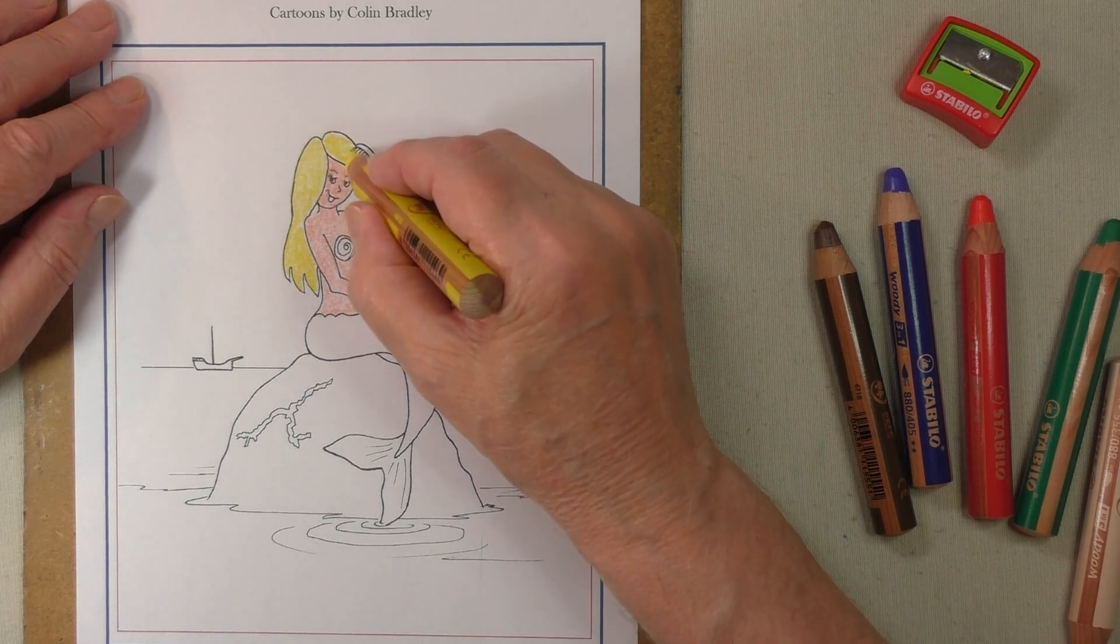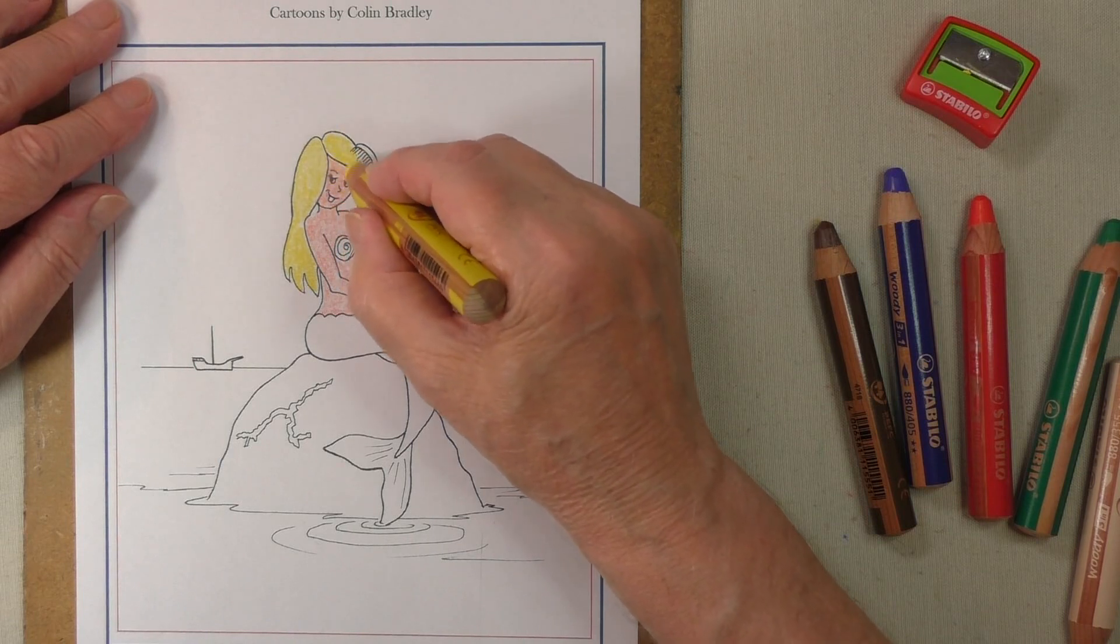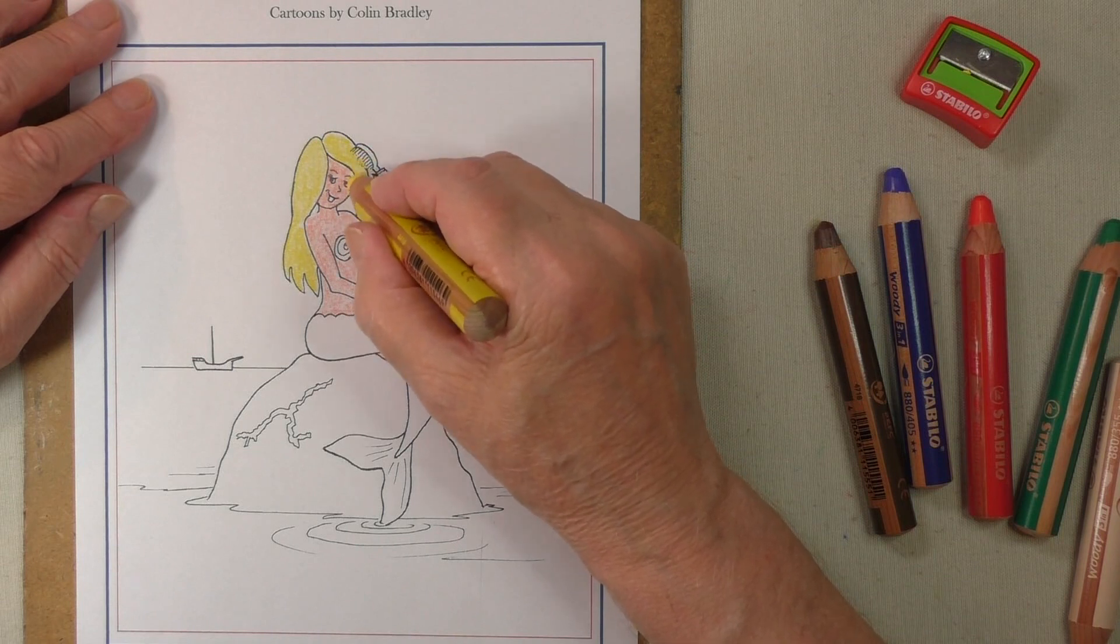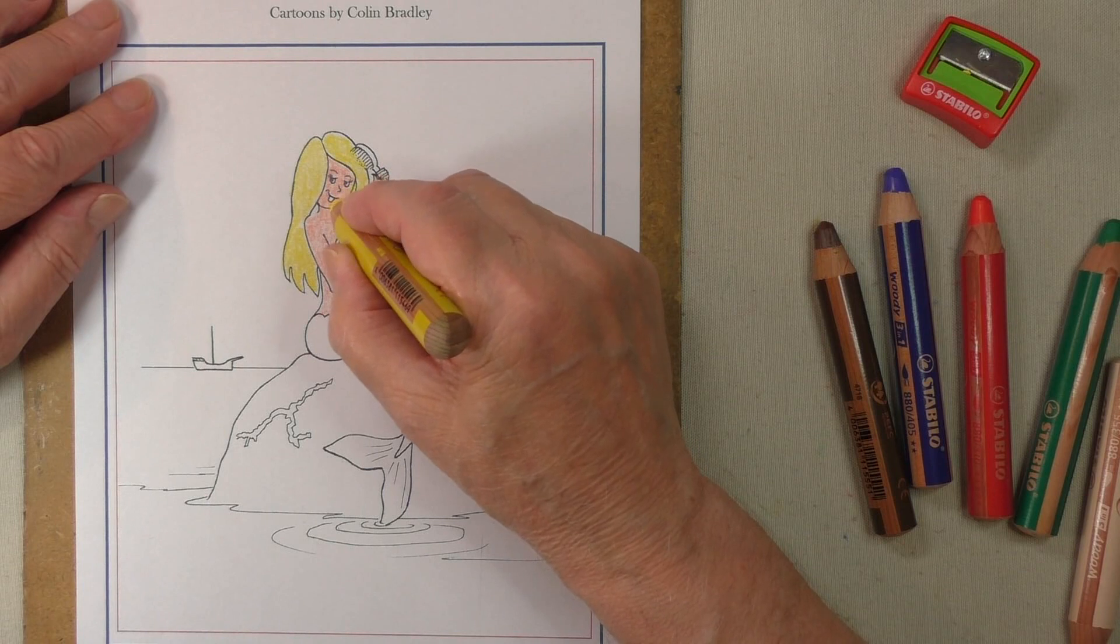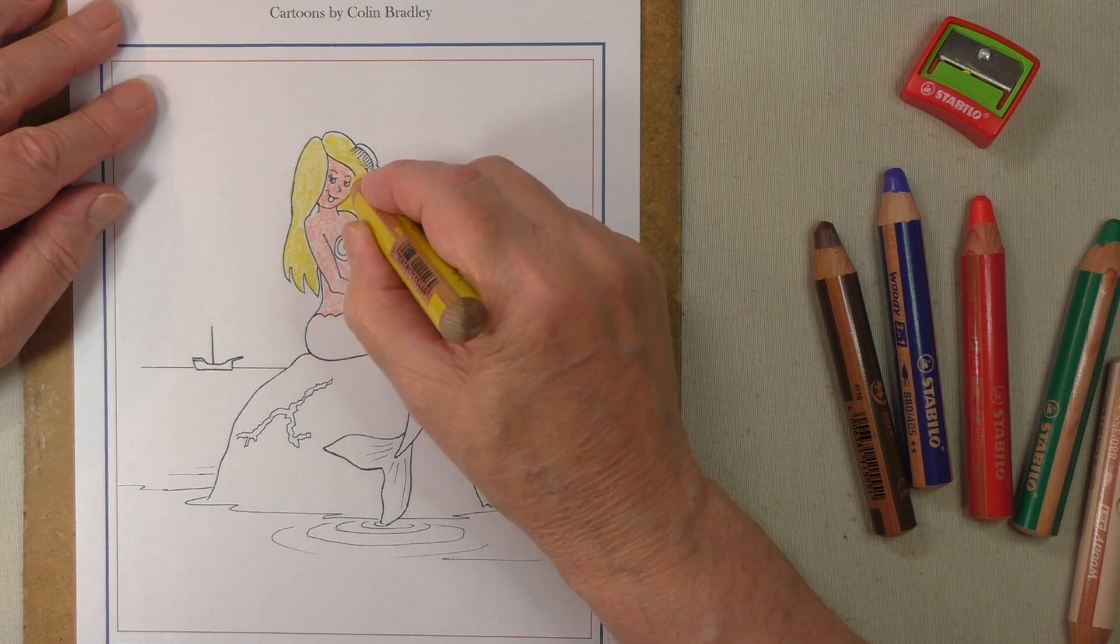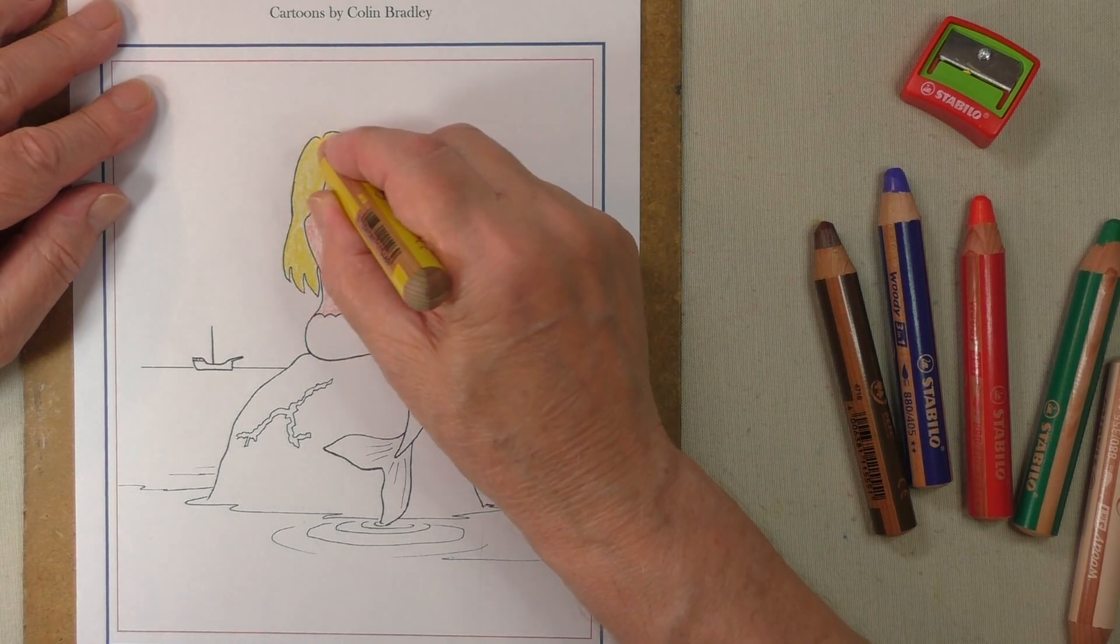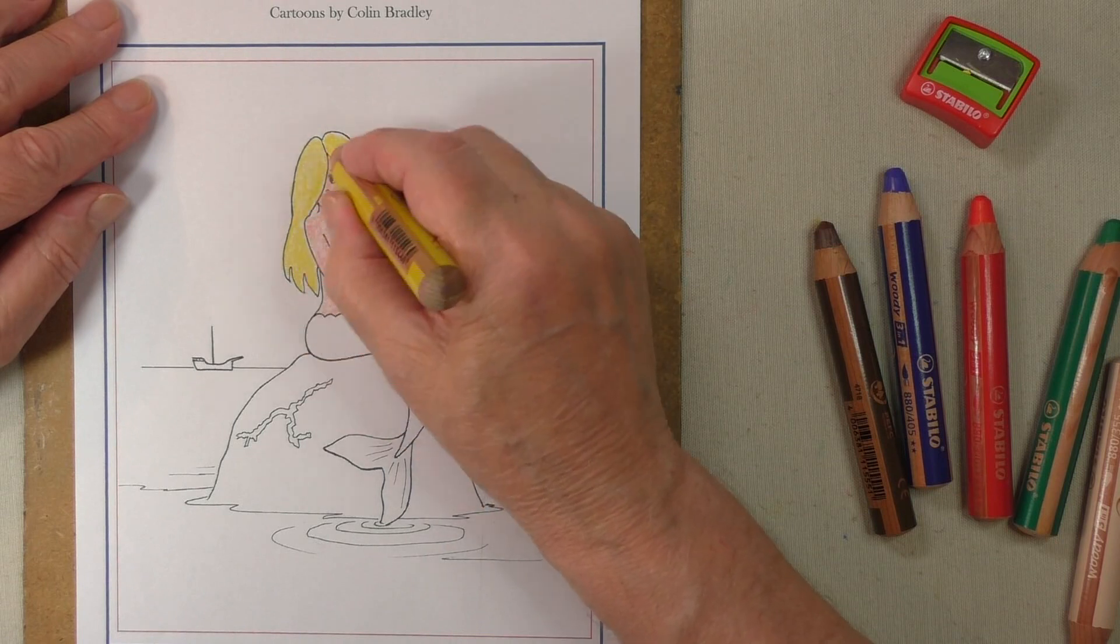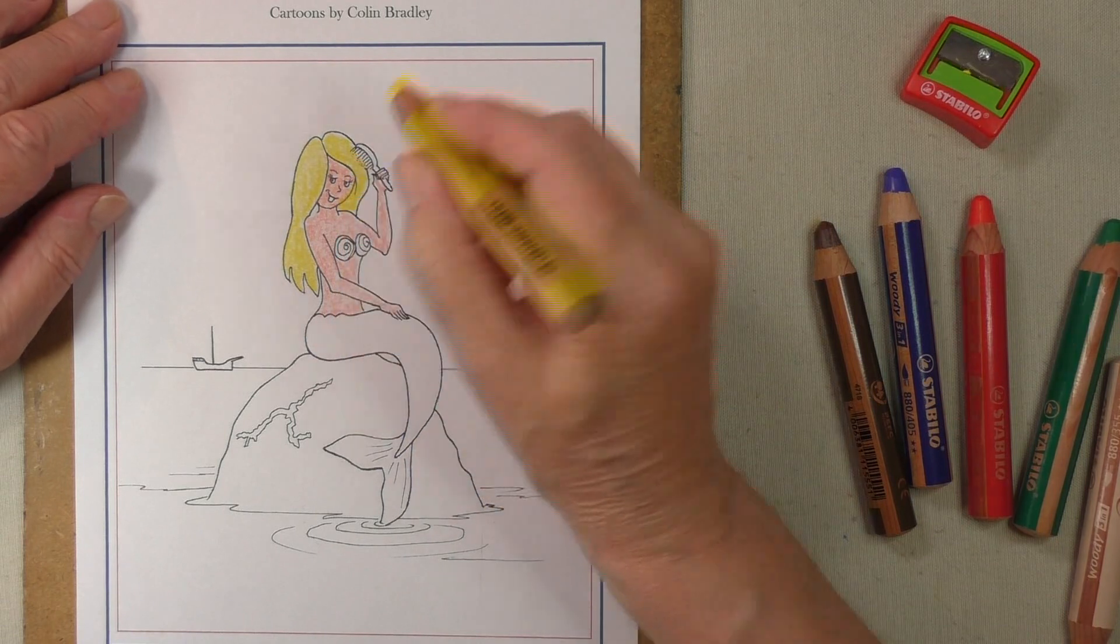Now she's brushing her hair. We come into the bristles and right up to the edge. There you go. Now, how pretty is that? Make it just a little stronger, so it really catches the eye. There you go.